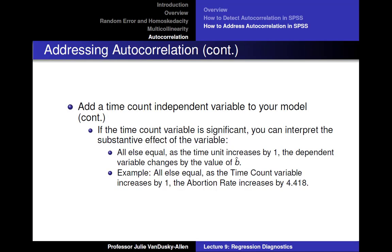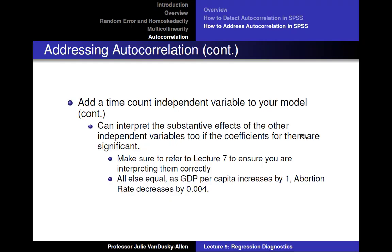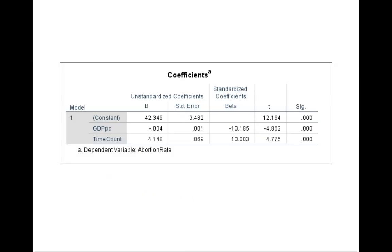If the time count variable is significant, you can interpret the substantive effect this way: all else equal, as the time unit increases by one, the dependent variable changes by the value of b hat. Using the example as an illustration, we can say all else equal, as the time count variable increases by one, abortion rate increases by 4.148. You can interpret the substantive effects of the other independent variables too, if the coefficients are significant. All else equal, as GDP per capita increases by one, abortion rate decreases by 0.004.